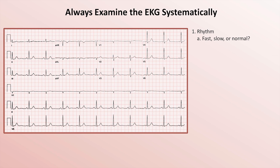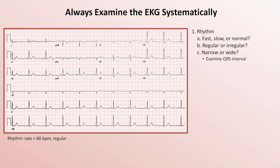Part B: is it regular or irregular? Here it's regular. Part C: is it narrow or wide — meaning a narrow or wide QRS complex? In other words, is the duration of the QRS interval within normal or is it long? This one is narrow complex.